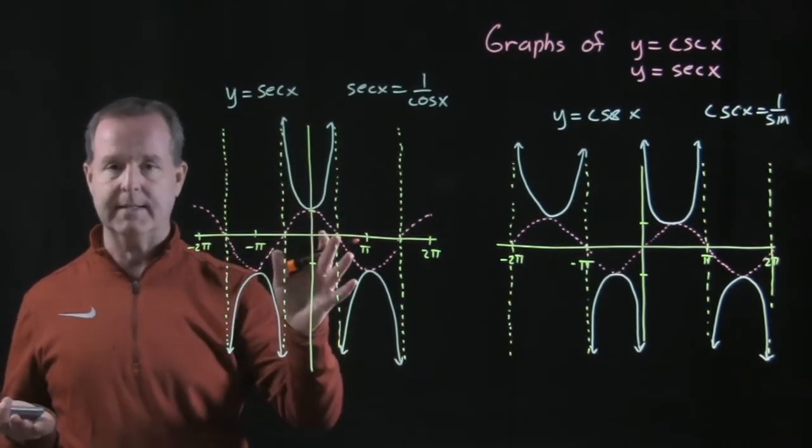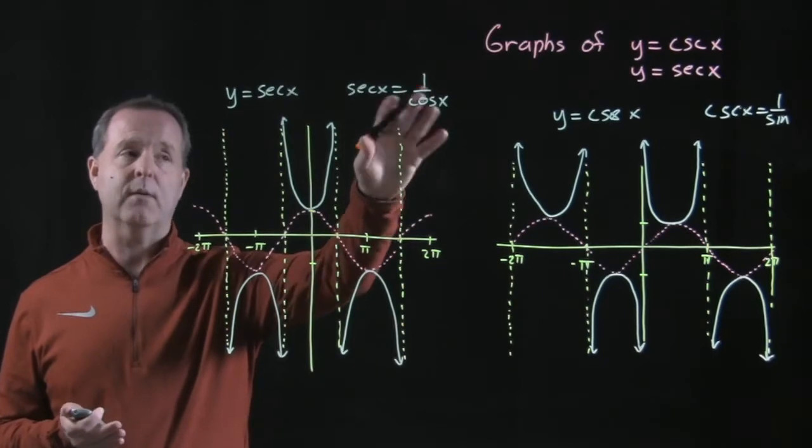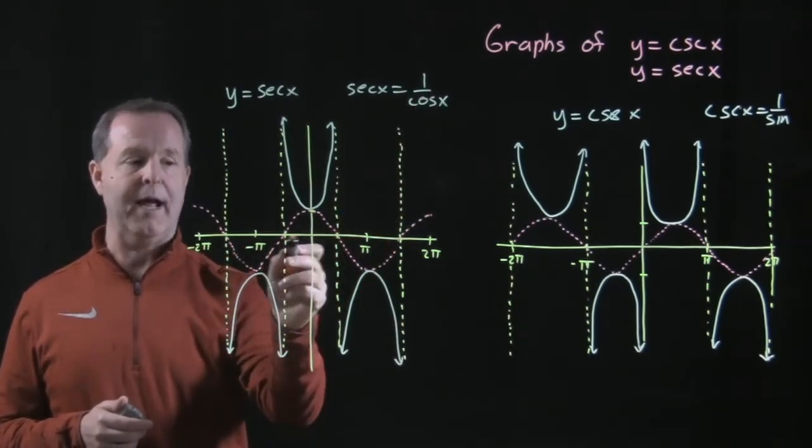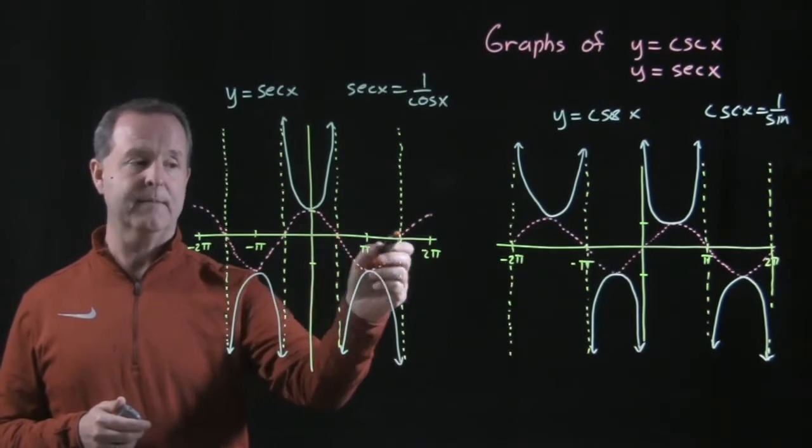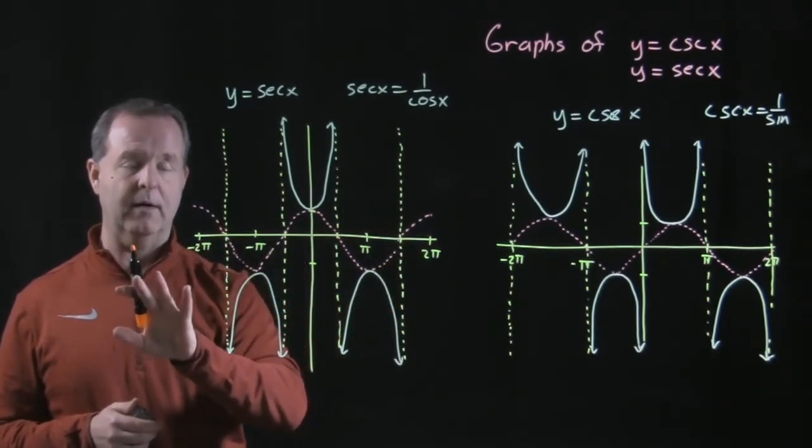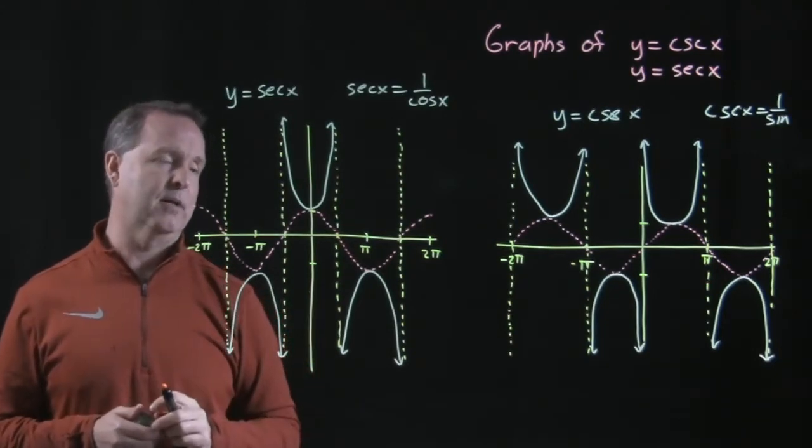The secant graph, very similar, it's the reciprocal of the cosine graph. Here we have vertical asymptotes at pi halves and three halves pi, and so forth. Not at the integral pi marks, but at the half pi marks.